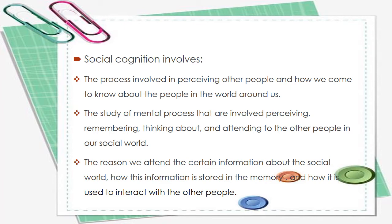Social cognition involves, first, the process involved in perceiving other people and how we come to know about the people in the world around us. Second, the study of mental processes that are involved in perceiving, remembering, thinking about, and attending to the other people in our social world. Third, the reason we attend to information about the social world, how this information is stored in memory, and how it is used to interact with other people.